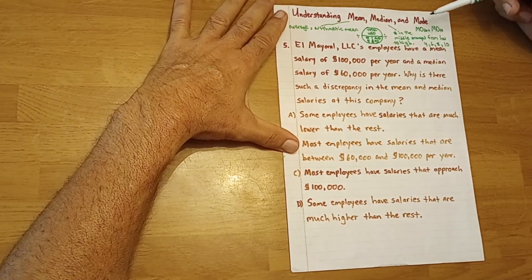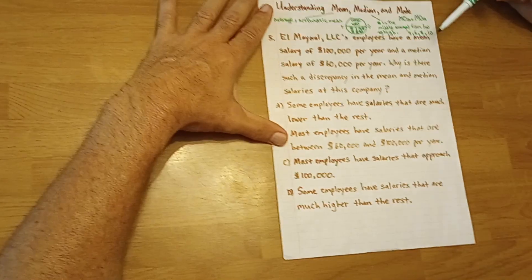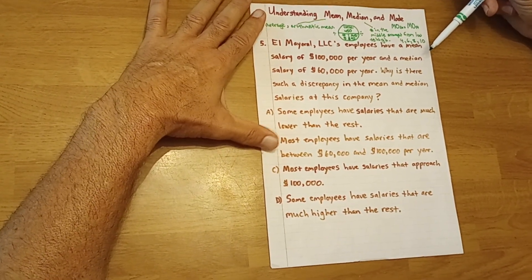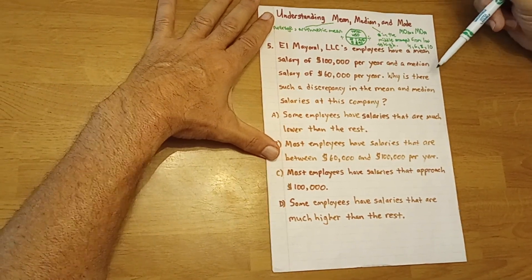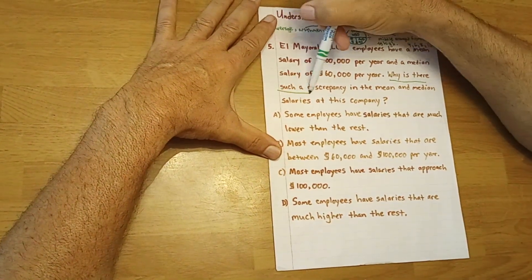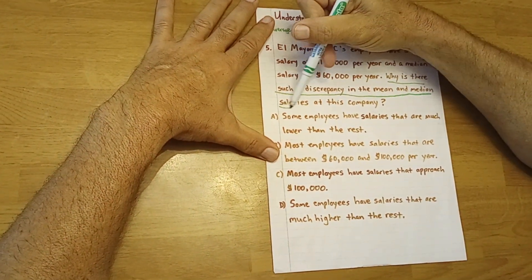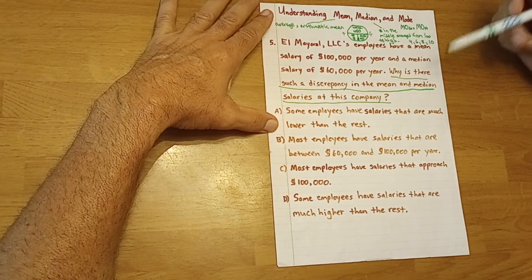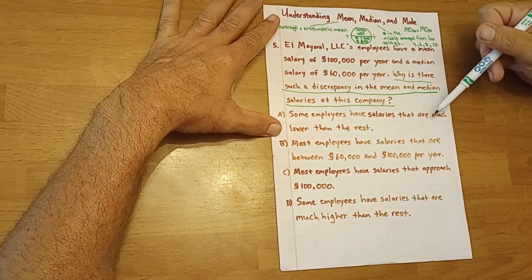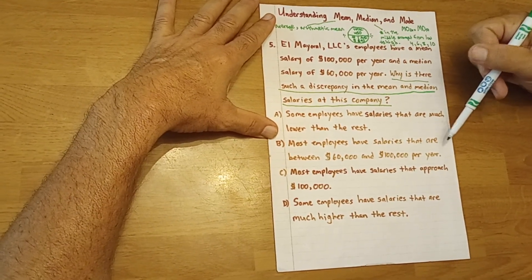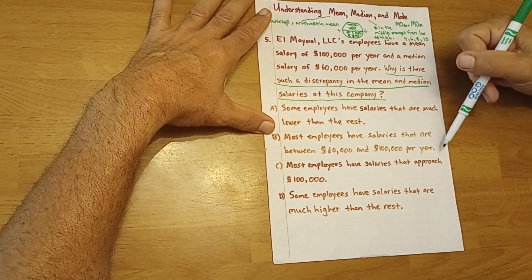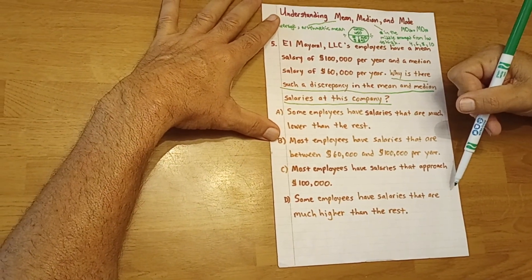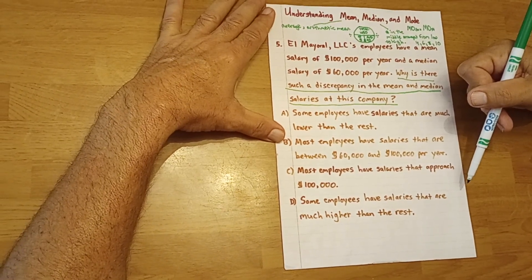So now with these things in mind, let's take a look at a problem here. The question is: Why is there such a discrepancy in the mean and median salaries at this company? Let's see the answer choices. We have: A) Some employees have salaries that are much lower than the rest. B) Most employees have salaries that are between $60,000 and $100,000 per year. C) Most employees have salaries that approach $100,000. Or D) Some employees have salaries that are much higher than the rest.